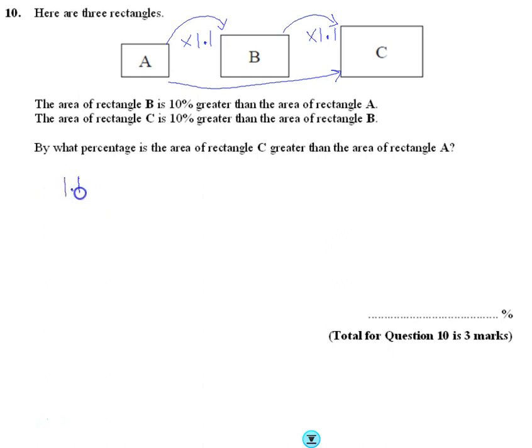What you're going to have to do is multiply 1.1 by 1.1, which is obviously 1.21. When we convert that back to a percentage, that's going to be 121 percent, so C is 121 percent of A.